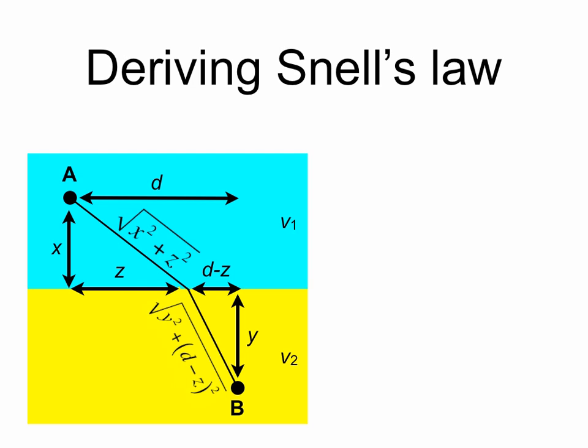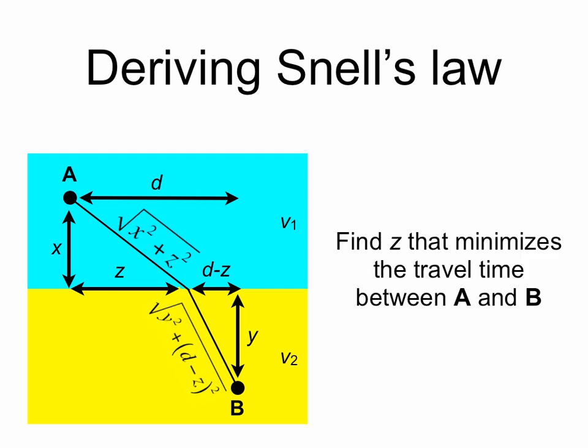We can use the Pythagorean theorem to find the lengths of the paths in the blue and yellow regions. We have a right triangle in the blue region, so the length of the path in the blue region is the square root of x squared plus z squared, and the length of the path in the yellow region is the square root of y squared plus (d minus z) squared. Our goal is to find the length z that minimizes the travel time between A and B.